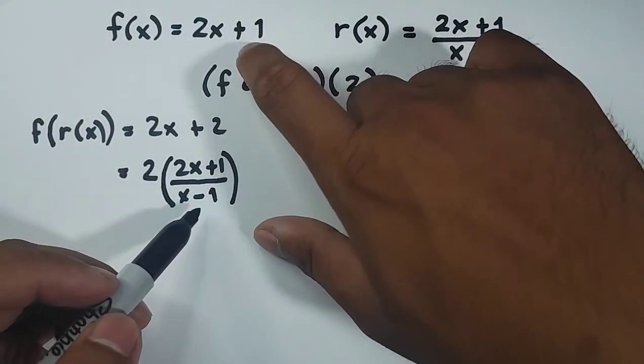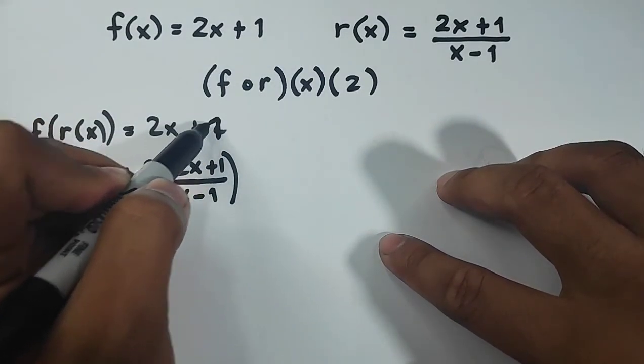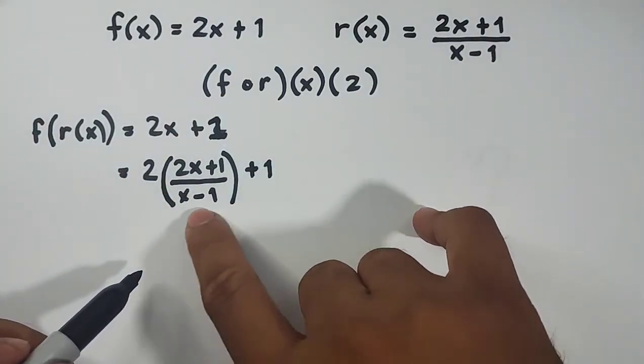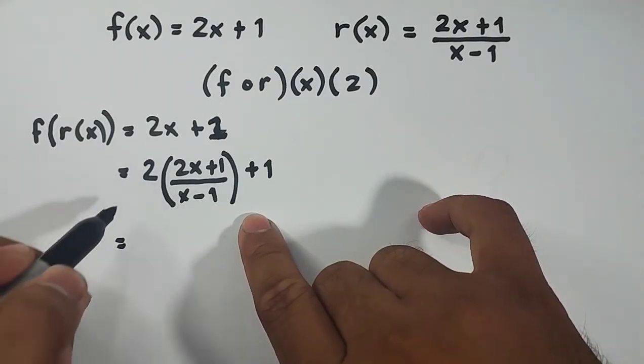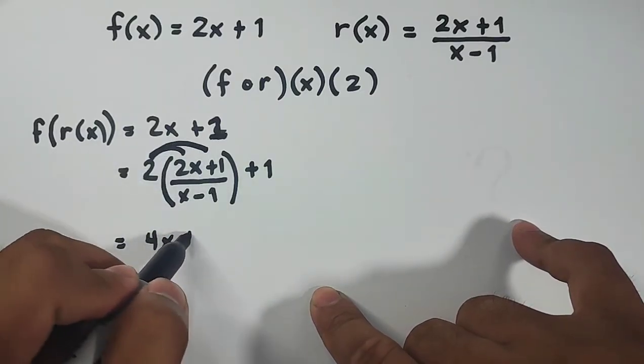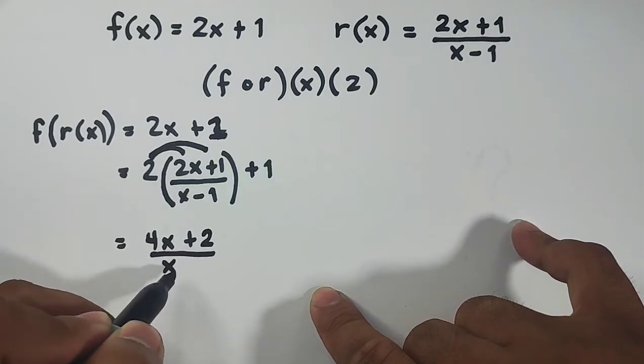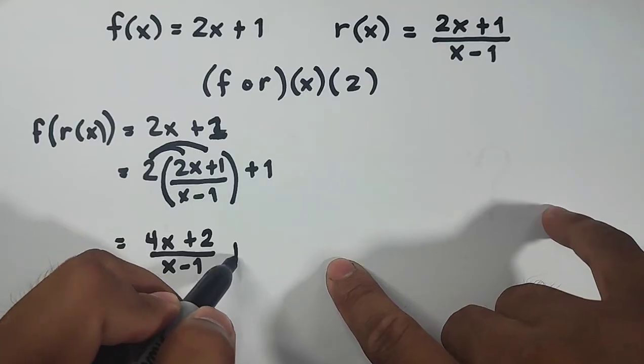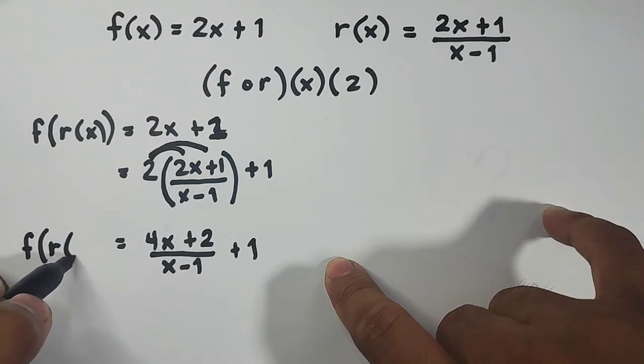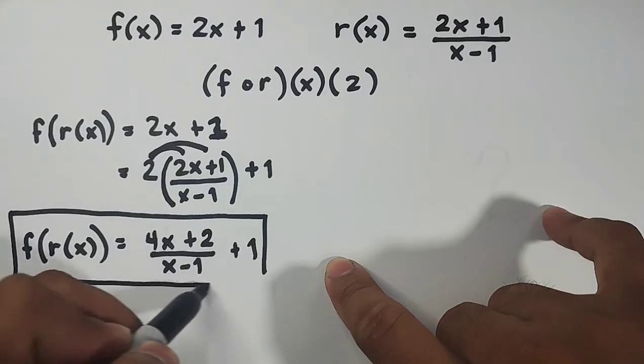Okay? Sir, bakit pa naging ganyan? Look, we have 2. Yung x mo is replaced by 2x plus 1 over x minus 1. And then, don't forget your original, sorry, this should be plus 1. So what you need to do here is to simplify, multiply using distributive property. 2 times 2x is 4x. Then, 2 times 1 is plus 2, over x minus 1. And then, meron ka rito sa labas na plus 1. Ito na ngayon yung ating evaluated na f of r of x. So ito yung gagamitin natin mamaya. So we are done evaluating this.